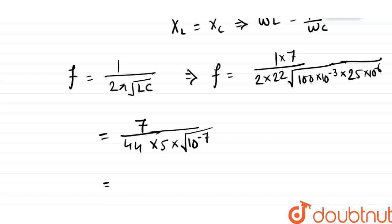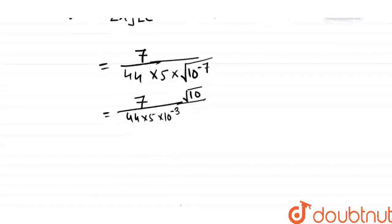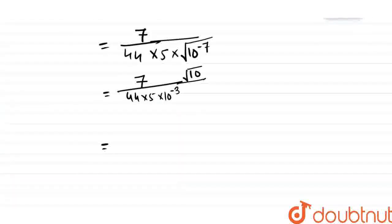So this becomes 7 upon 44 into 5 into 10 to power minus 3, under root 10 to power minus 1. When we solve this, we'll get the resonant frequency.